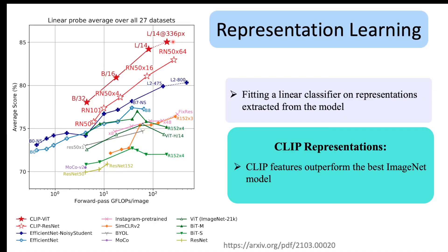This figure compares the performance of different CLIP models shown with the star with other existing models based on the computational cost on the x-axis and average score on the y-axis. As you can see, the best CLIP model, ViT-L, which is pre-trained at higher resolution 336 pixels, outperforms all existing models.